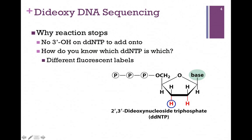Remember, in these dideoxynucleotides we're missing that 3'OH, and we need that as the nucleophile to attack the incoming nucleotide. So once a dideoxynucleotide has been incorporated, synthesis stops. So how do you know which dideoxynucleotide it is?